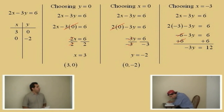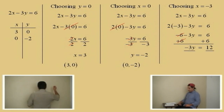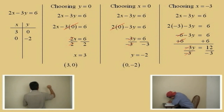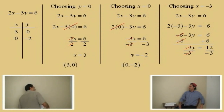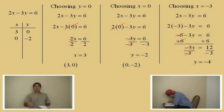Remember, we're solving for y. What do we do next? Divide by negative 3. Divide both sides by negative 3. We'll go ahead and show that. Bring our bar down. There's a negative 3. Those cancel. What do we get for y? Negative 4. Very good. So, we chose x equal negative 3, and y came out to be negative 4.